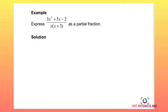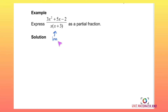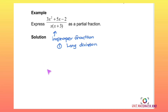Let's look at the first example: express this expression as a partial fraction. First, we need to check whether this is a proper or improper fraction. The degree of the numerator is 2 and the degree of the denominator is also 2. Since the degree of the numerator is equal to the degree of the denominator, this is an improper fraction, so the first step is long division.